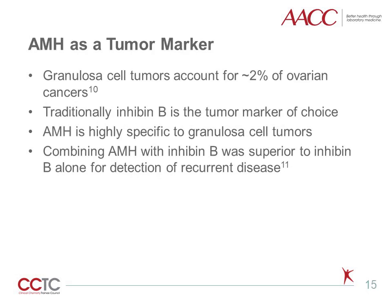Finally, AMH is also useful as a tumor marker. As noted earlier, anti-mullerian hormone is secreted by granulosa cells. Granulosa cell tumors account for 2% of ovarian cancers and characteristically secrete anti-mullerian hormone. Historically, inhibin B was the tumor marker used in following patients with granulosa cell tumors. However, recent studies have found that AMH was also significantly elevated in patients with primary or recurrent tumors and also correlated with tumor size. Combining inhibin B and AMH measurement improved the detection of recurrent disease.